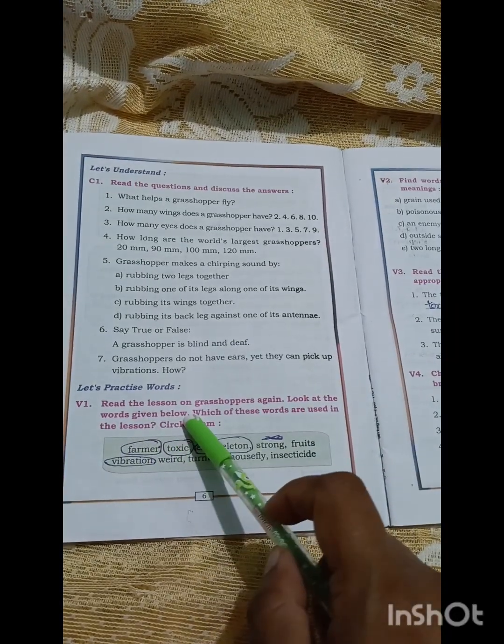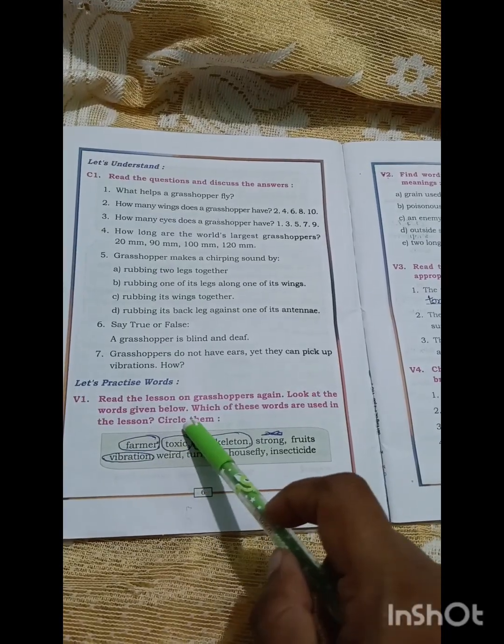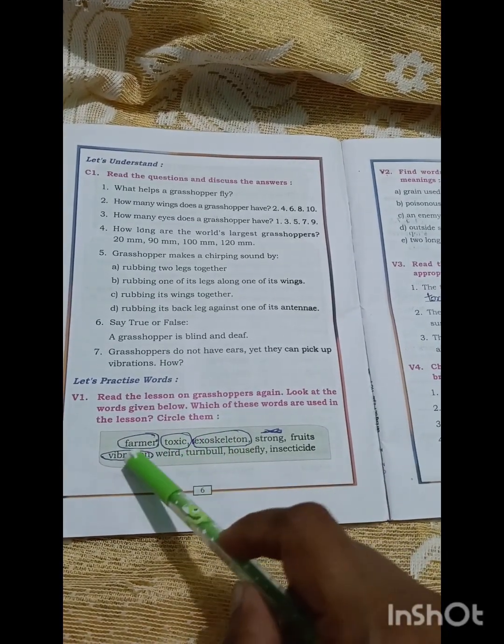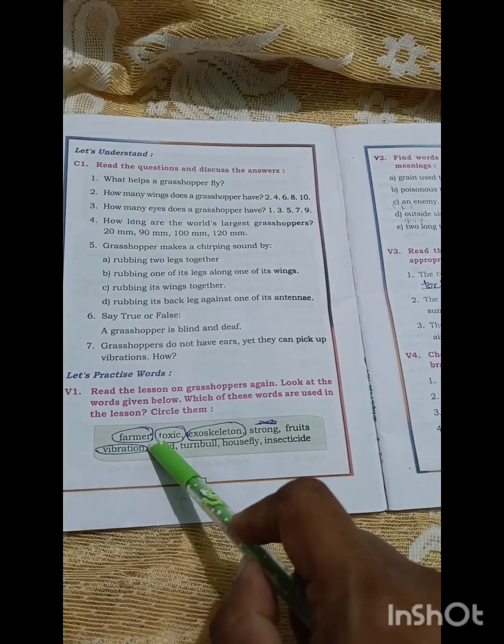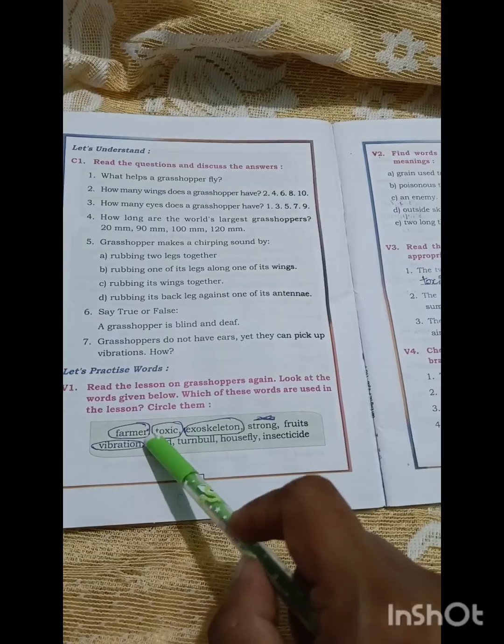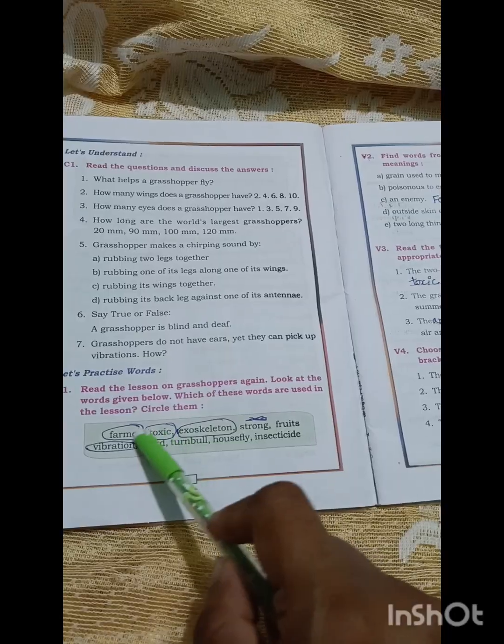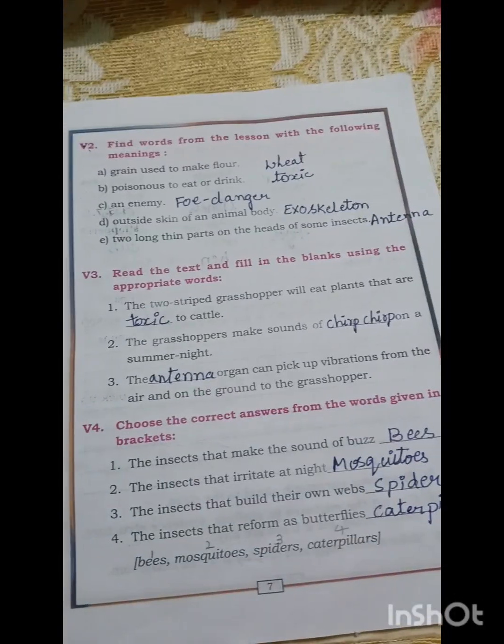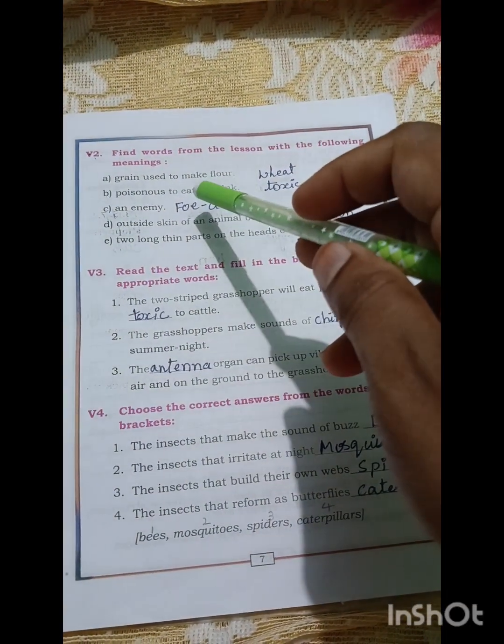Read the lesson on grasshopper again. Look at the words given below, which of these words are used in the lesson? Circle them. The words include toxic, exoskeleton, and vibration. These two words are used in the lesson.